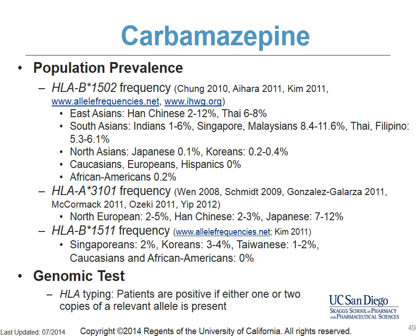The frequency of HLA-B*1502 differs widely among ethnicities. It is significantly higher among Han Chinese and other East Asians. According to the FDA, 10 to 15% of patients may carry HLA-B*1502 in parts of China, Thailand, Malaysia, Indonesia, the Philippines, and Taiwan. The frequency is intermediate among South Asians and negligible among Japanese, Koreans, and Caucasians. HLA-A*3101 allele frequency is 2 to 5% in Northern Europeans, 2 to 3% in Han Chinese, and 7 to 12% in Japanese. HLA-B*1511 allele frequency is 2% in Singaporeans, 3 to 4% in Koreans, 1 to 2% in Taiwanese, and 0% among Caucasians and African Americans.